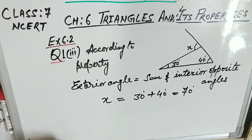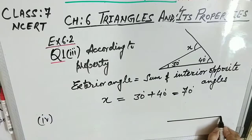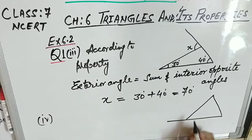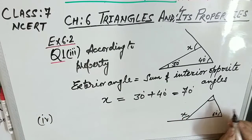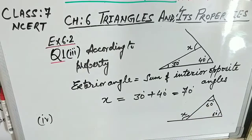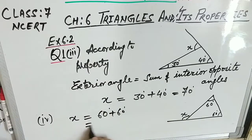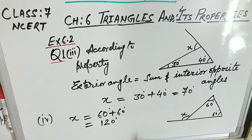Question number 4 is similar. The exterior angle is x and both opposite interior angles are 60°. So the value of x = 60° + 60° = 120°. If you understand the property well, these become oral questions — you can solve them just by looking. I hope you will solve the remaining parts; if you have any trouble, write the question number in the comment box.